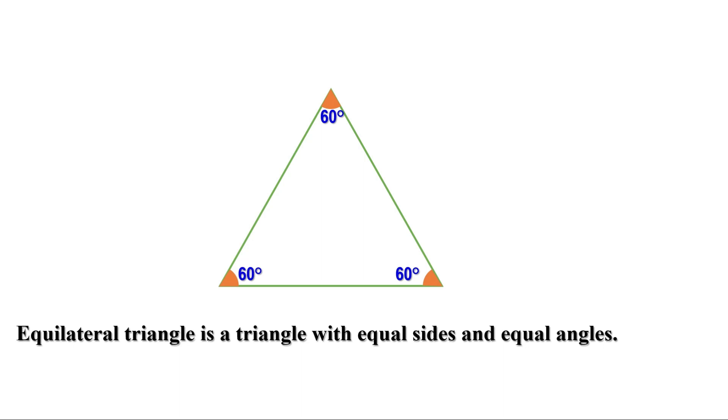On the other hand, if the sides of a triangle are equal, then its angles are also equal. Such triangles are called equilateral triangles. That means in an equilateral triangle, all sides are equal and all angles are also equal. If the angles of a quadrilateral are equal, is it necessary that the sides are also equal? Let us consider a rectangle — here all angles are equal and we know all angles are 90 degrees, but all its sides are not equal.